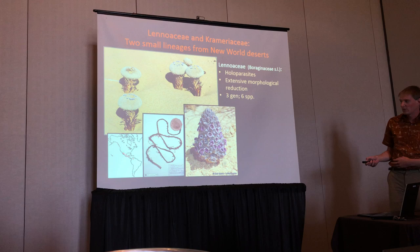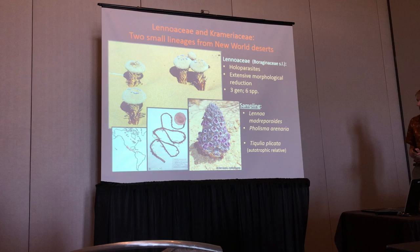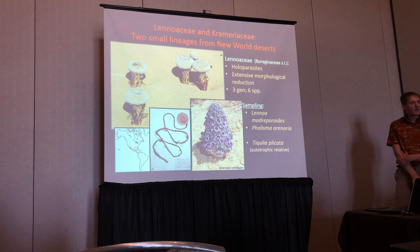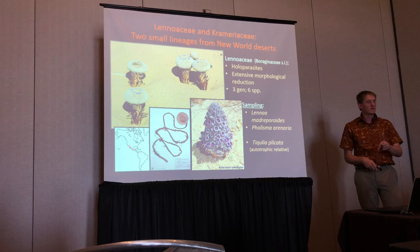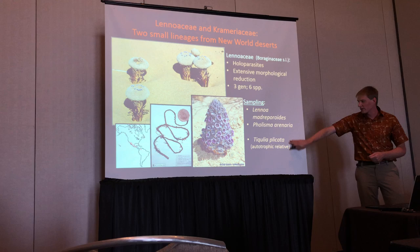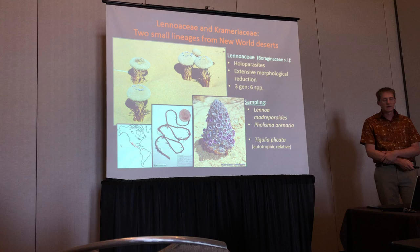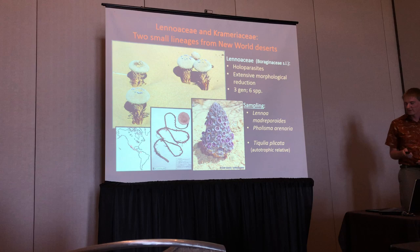These plants are typically restricted to arid regions in the New World, as you can see on this range map. We chose to sample two different individuals that span the basal node of this clade, to get a sense of both how much plastome loss is happening along the stem lineage, and whether you see any species-specific or lineage-specific differences within that lineage. It's always important to have a control, so we also looked at Ximenia plowmanii, an autotrophic relative in the sister clade to the Lenoacee.